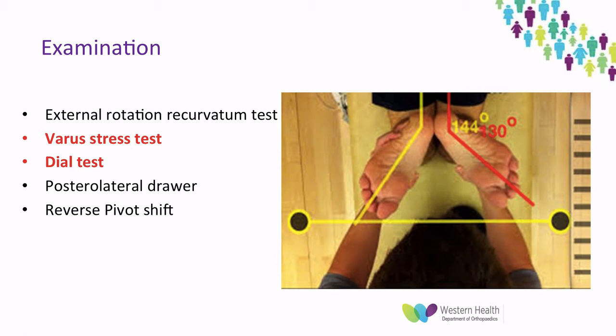They also describe a posterolateral draw test, where the patient is supine, knee flexed to 80 degrees and foot externally rotated to 15 degrees, and a posterior force is applied like in a posterior draw test. A positive test is an increase in posterior tibial translation and external rotation of the tibia. And then there is the reverse pivot shift, which is essentially the opposite of the pivot shift we perform for an ACL.